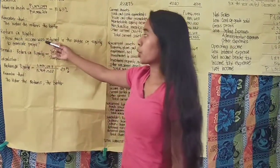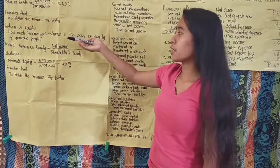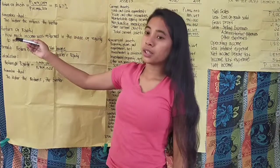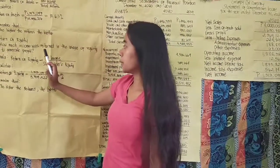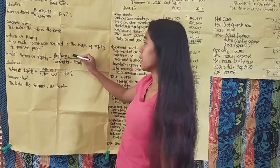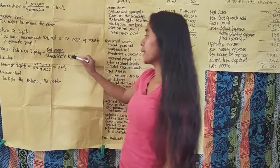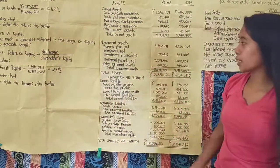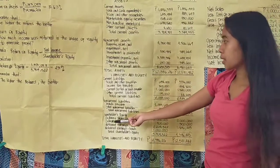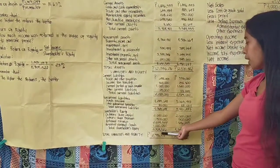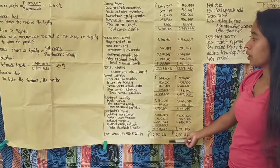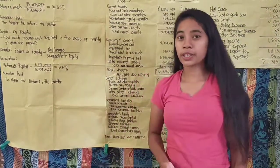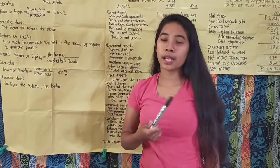Return on equity answers: how much income was earned through the usage of equity to generate profit? Net income of 1,330,770 divided by shareholders' equity of 5,709,522 gives 23%. The entity enjoyed 23% returns on shareholders' investment or equity. The higher the returns, the better. That's all and thank you.